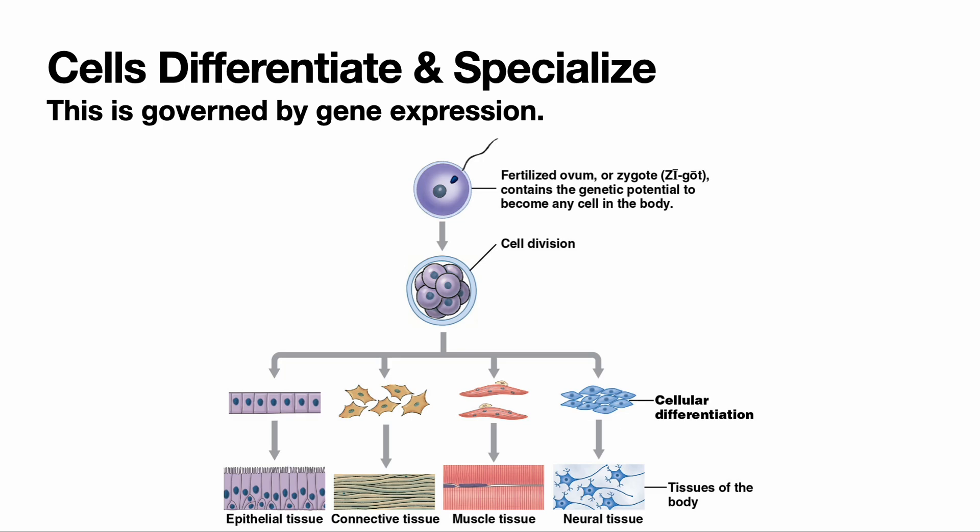These cells are all really different and do different things. So how do we start with a single fertilized egg and end up with all these different kinds of cells? Cells go through the process of differentiation and specialization. As that fertilized egg undergoes many rounds of mitosis, those cells will differentiate — they will activate or inactivate certain genes in their nuclei that will dictate what kind of cell they become.